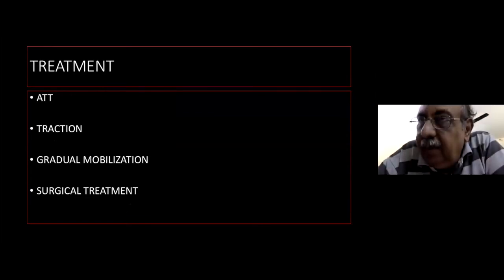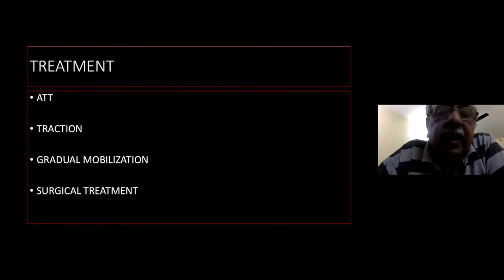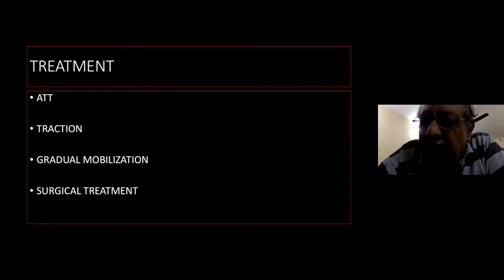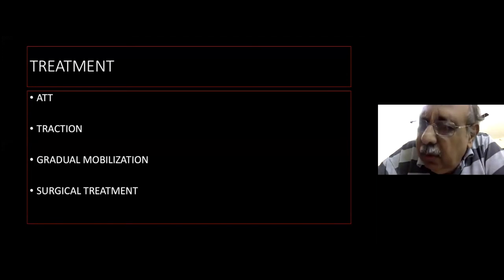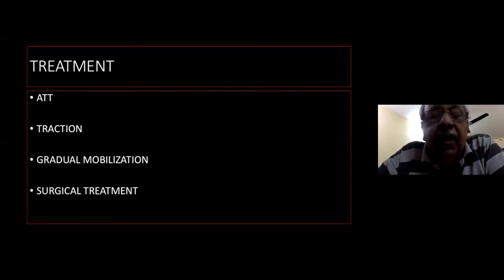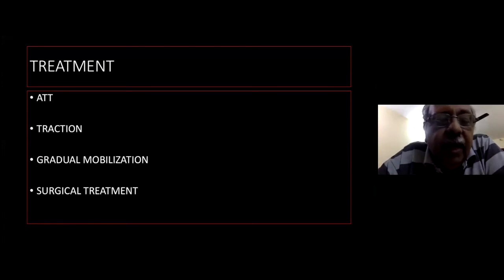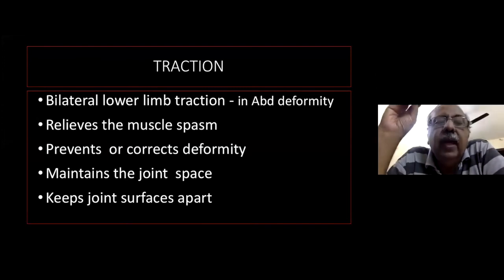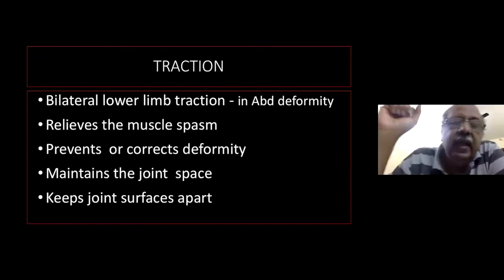Regarding treatment, antituberculous treatment (ATT) must be given in all stages. You should know about 99-DOTS, fixed drug combinations, and the RNTCP protocol for standard extrapulmonary tuberculosis, as well as treatment for resistant cases — MDR-TB and XDR-TB. Traction is also used in all stages, followed by gradual mobilisation, weight bearing, and surgical treatment. In abduction deformity, bilateral skin traction is applied. It helps release muscle spasm, prevent or correct deformities, maintain joint space, and keep the joints apart.